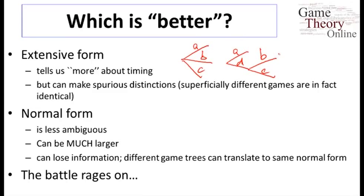So those are arguments for and against the extensive form. Some would say that the normal form is unambiguous. It doesn't let you guess about what's being represented. On the other hand, it can be much, much larger. Even in our example of the battle of the sexes, we had seven nodes in the tree as opposed to the eight cells in the game.